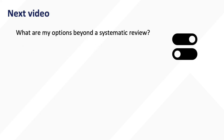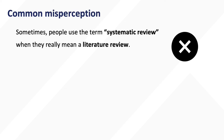If you don't have sufficient resources to complete a systematic review, watch our next video to learn about alternative types of reviews. Note there is a common misperception: sometimes people use the term systematic review when they really mean a literature review, which is a general summary and analysis of published research on a topic. Literature reviews require less extensive resources to prepare.